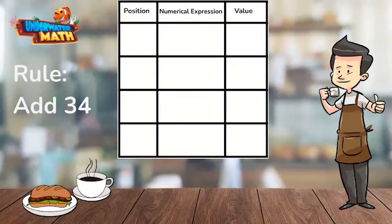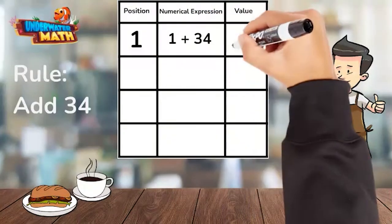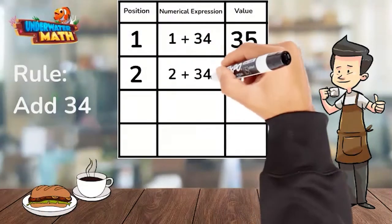The rule is to add 34 to the position. If the position is one, our expression is one plus 34 to reach a value of 35. The numerical expression for position two is two plus 34 to reach a value of 36.